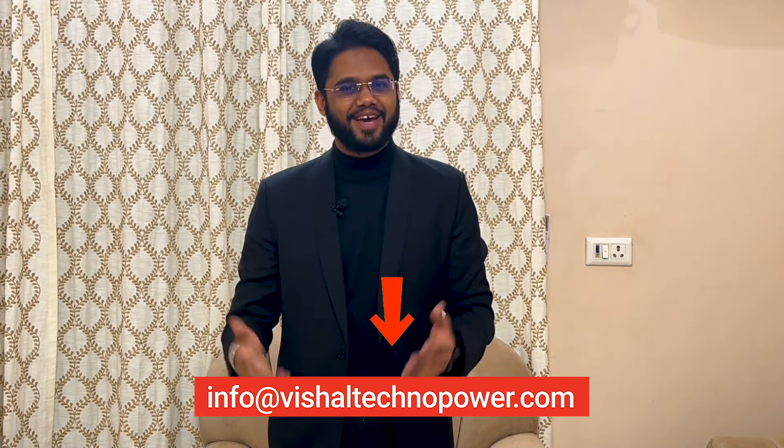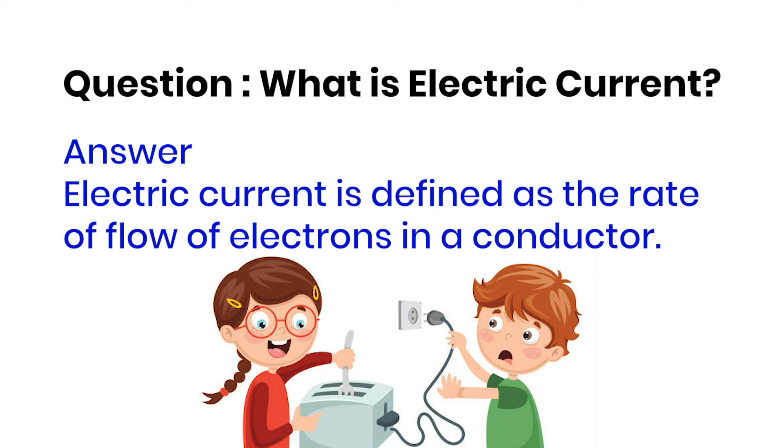So I am going to start our video. If you want to know — electric current is the rate of flow of negative charge.